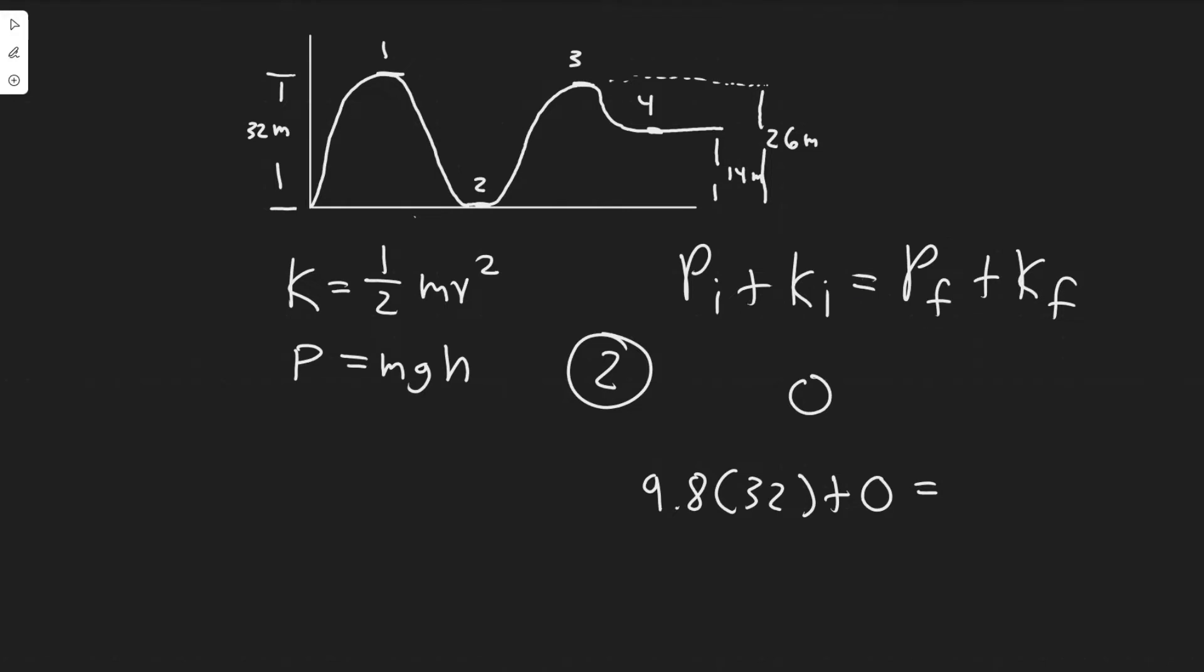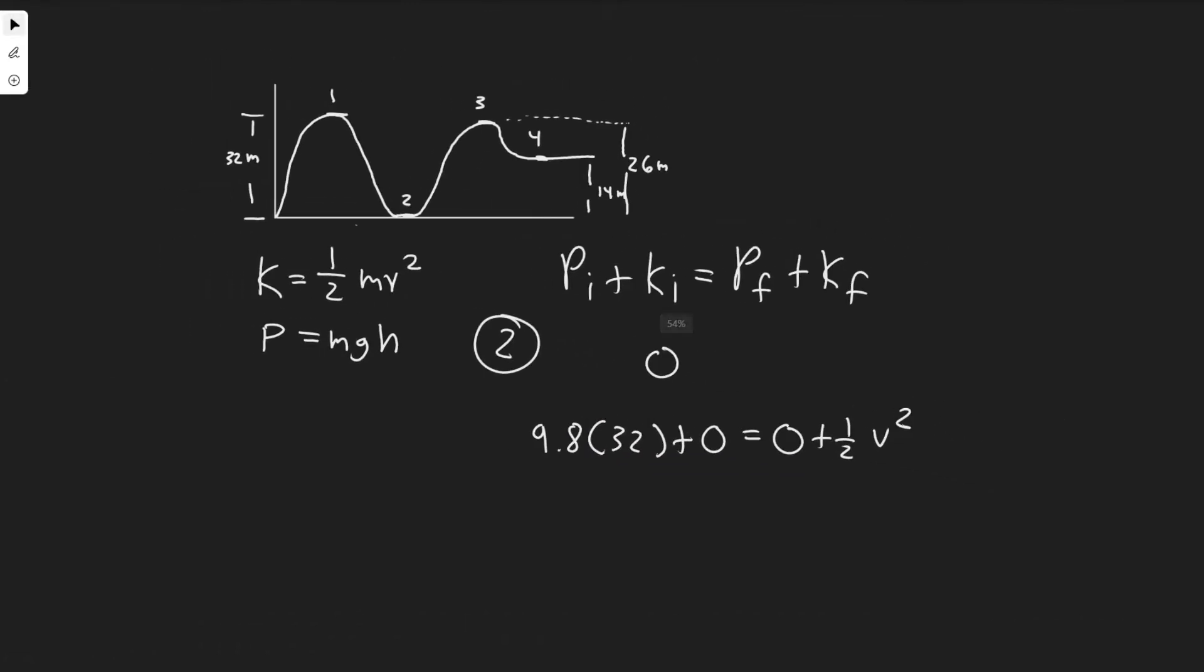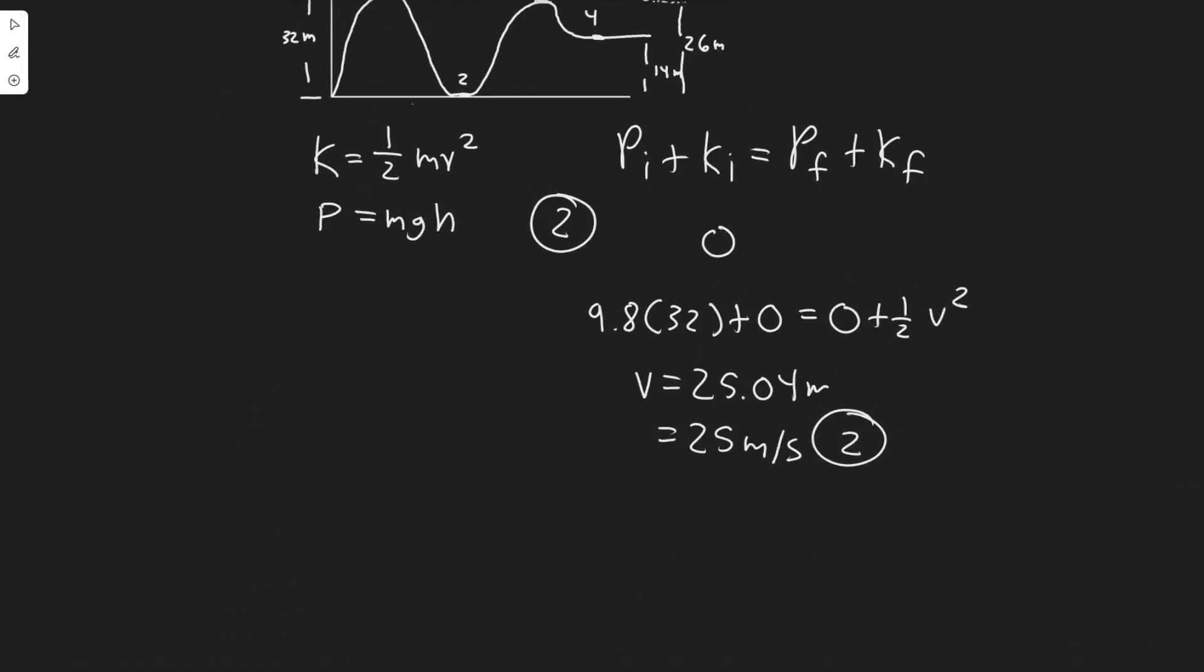Now what's the potential energy at the bottom? Keep in mind, its height is zero because it's at the bottom, meaning this whole thing would go to zero. Plus one half V squared, once again, the M is gone. So we just have V by itself now and we can solve. So 9.8 times 32 times 2 and then square root it. You're going to get V equals 25.04. We can just write it as 25 meters per second. So that's going to be the speed at point two.